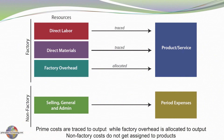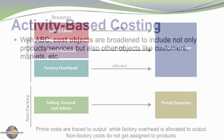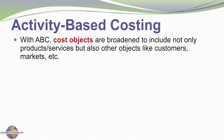This is simply a slide reviewing traditional costing — there's nothing new here. On the left are resources: material, labor, and overhead, which are traced or allocated to our products and services. As a reminder, our non-factory selling and administrative costs are period expenses in each period as incurred. This will be in direct contrast to the method we'll use for activity-based costing.